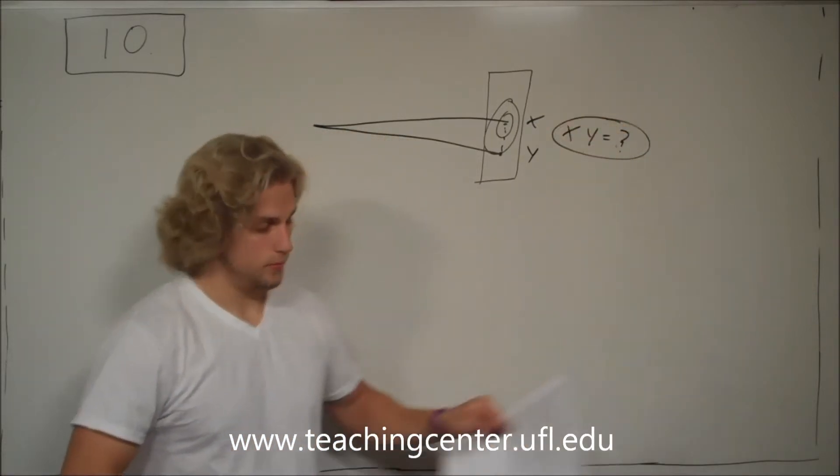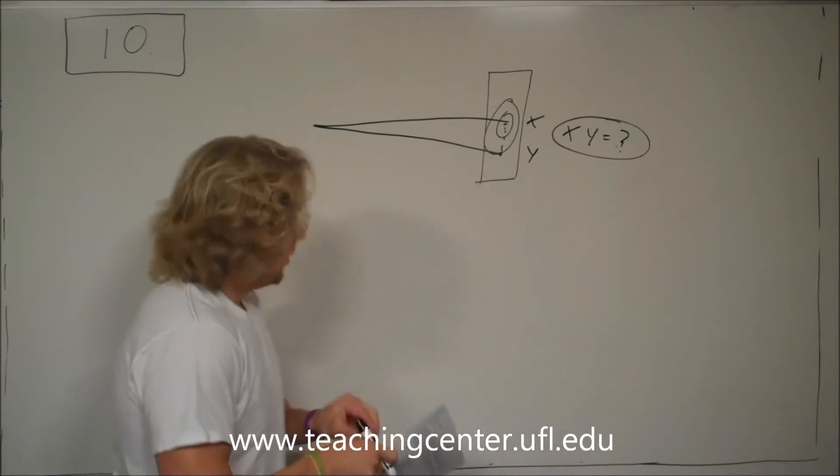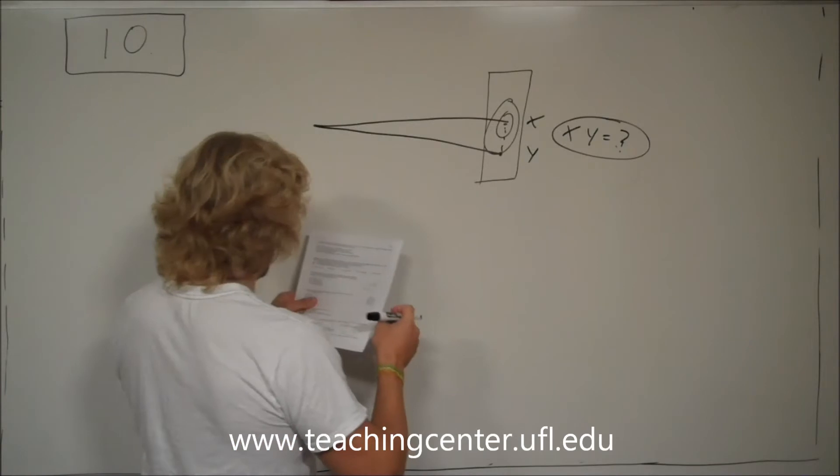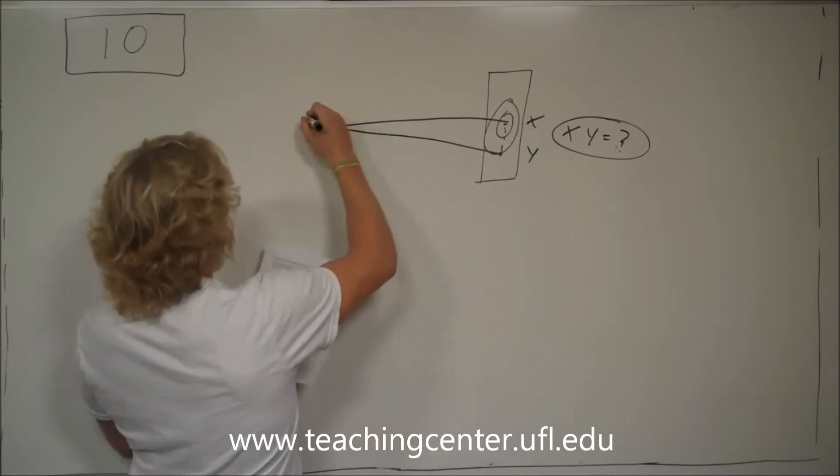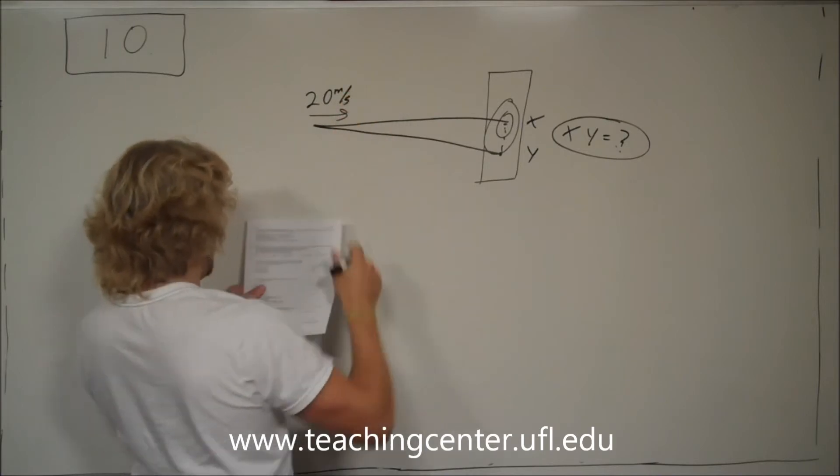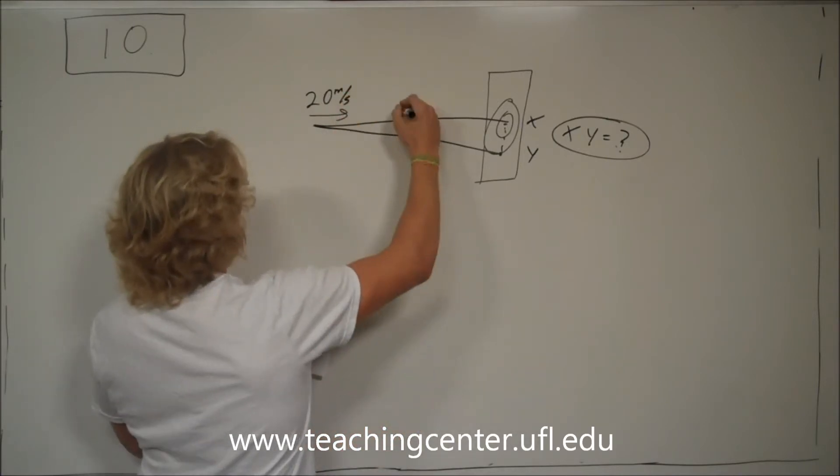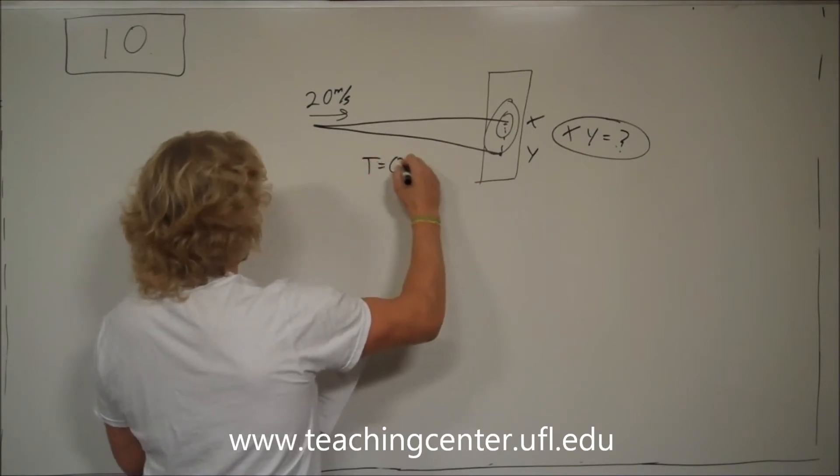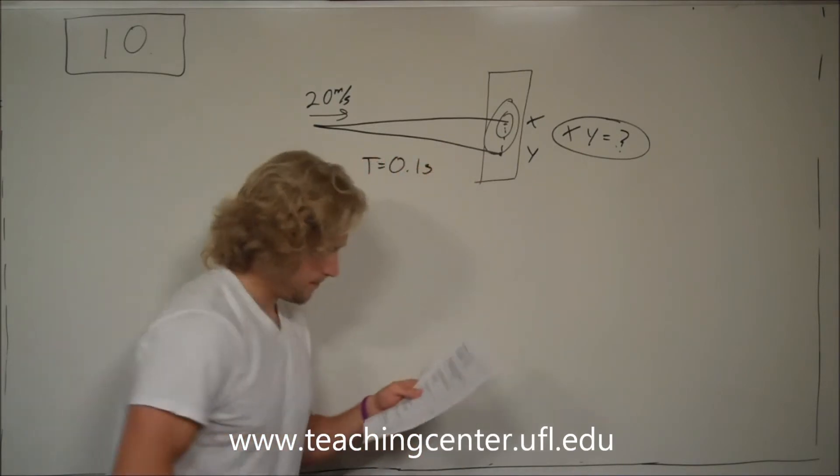Always write out what you're looking for. Always write out the givens as well. We're given that a dart is thrown horizontally, the velocity here is 20 meters per second. And the time that it takes to hit point y is equal to 0.1 seconds.